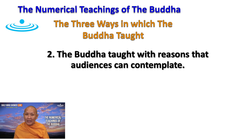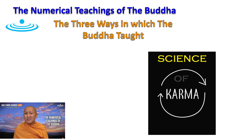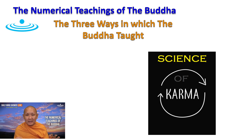The second method: the Buddha taught with reason that others can contemplate. What he taught is reasonable — you can prove it by yourself. He taught in a logical way. For example, the law of karma is a science of cause and effect: what you have done in the past and what you do right now will affect your future. The law of karma is one of his Dhamma teachings that explains the cause and reason of cause and effect.